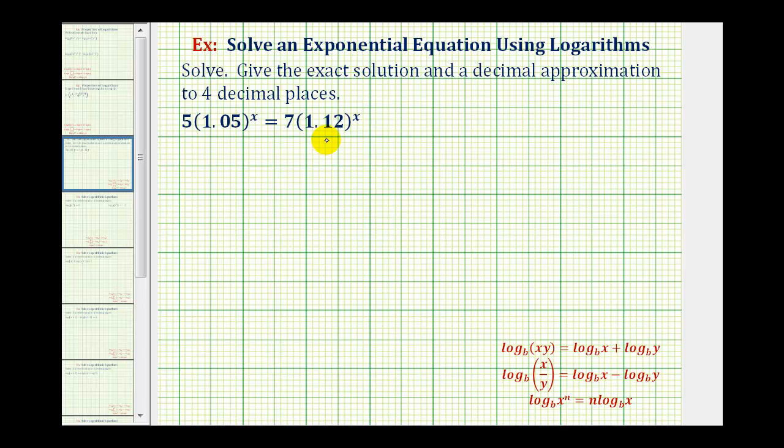So there are several ways to go about solving for x, but what I'm going to do is get the exponential part on the left side of the equation, and everything else on the right side. So let's start by dividing both sides by five. This will give us 1.05 to the power of x equals seven-fifths times 1.12 raised to the power of x.